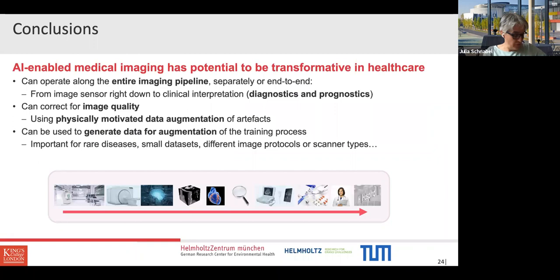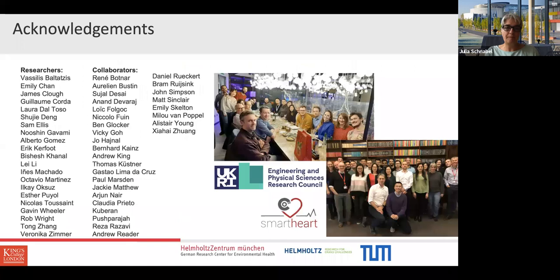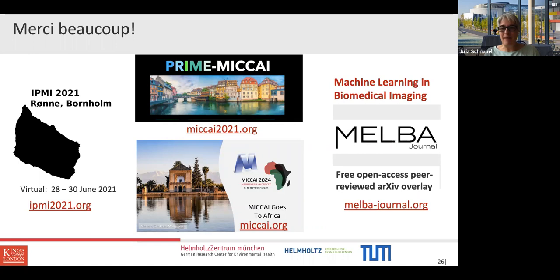To conclude: this is our work on AI-enabled medical imaging, which can operate along the entire imaging pipeline — separately, modularly, or end-to-end — going from the image sensor to diagnostics or even prognostics. We've looked at image quality and quality control for cardiac imaging and physically motivated data augmentation of MR artifacts, as well as generating data for augmentation in the training process, important for rare diseases, small datasets, and different imaging protocols. I'd like to acknowledge all the researchers and our SMART-ART consortium, and mention the MELBA journal, which I hope can receive some of your submissions. Thank you.